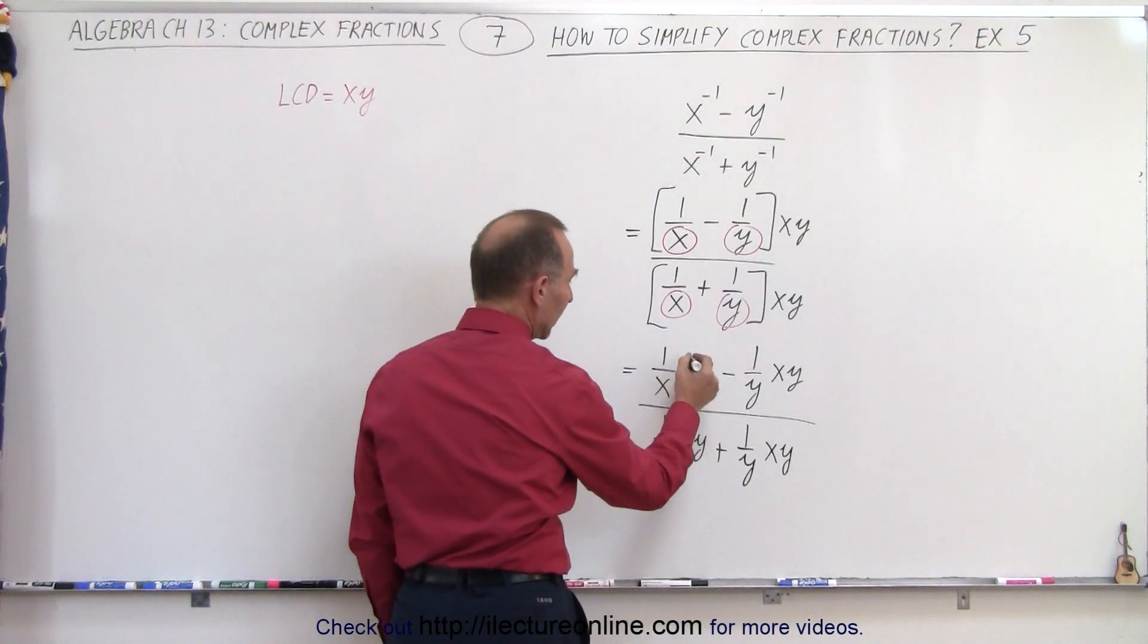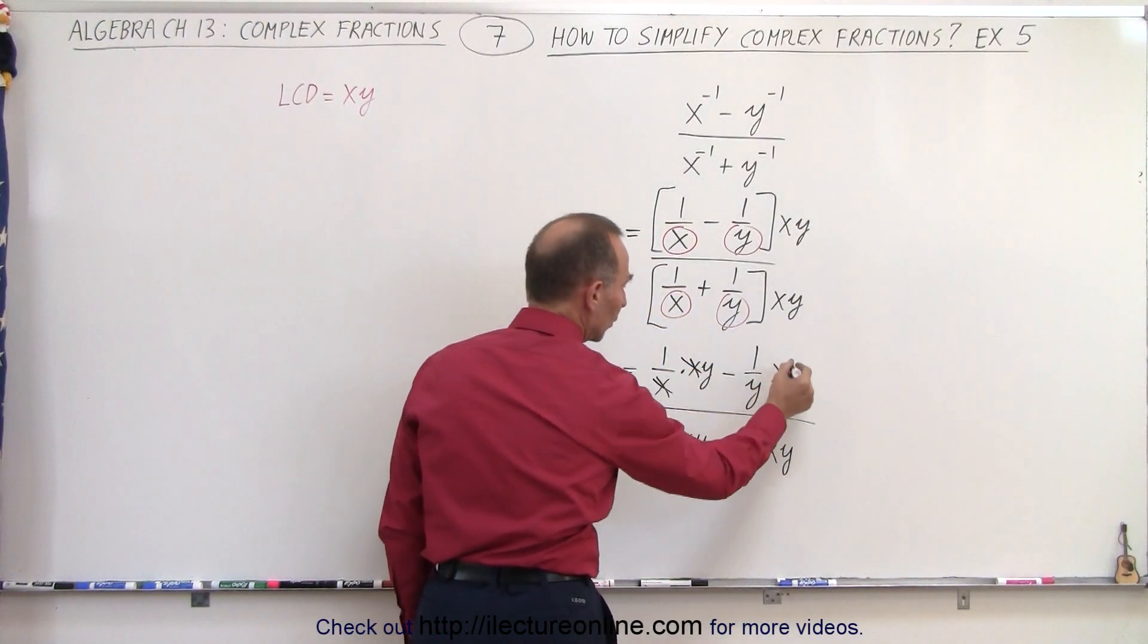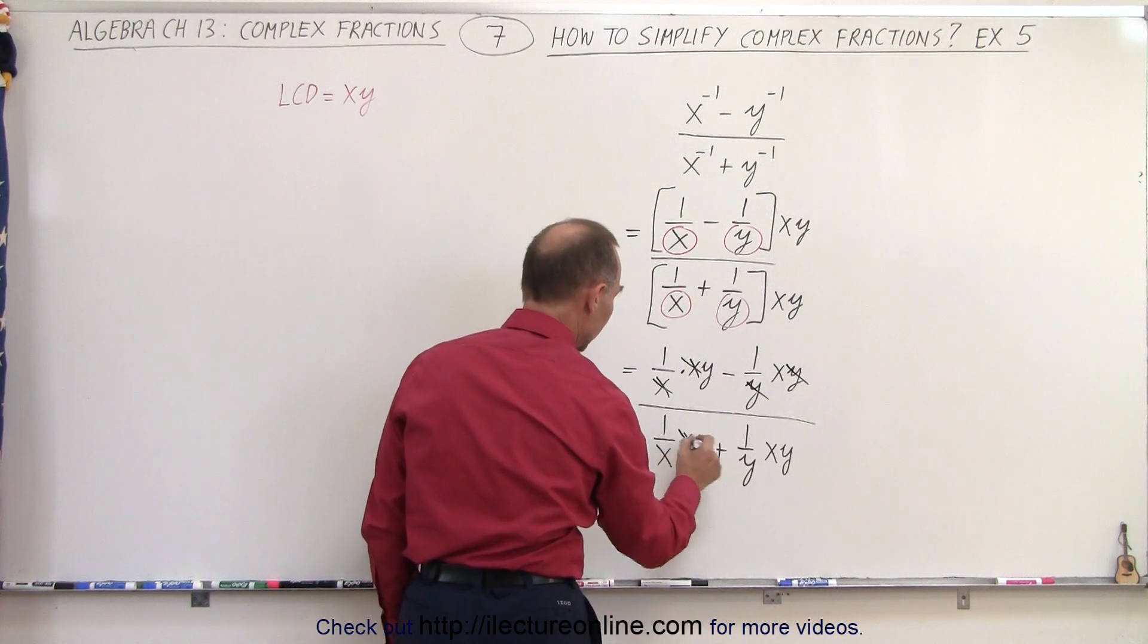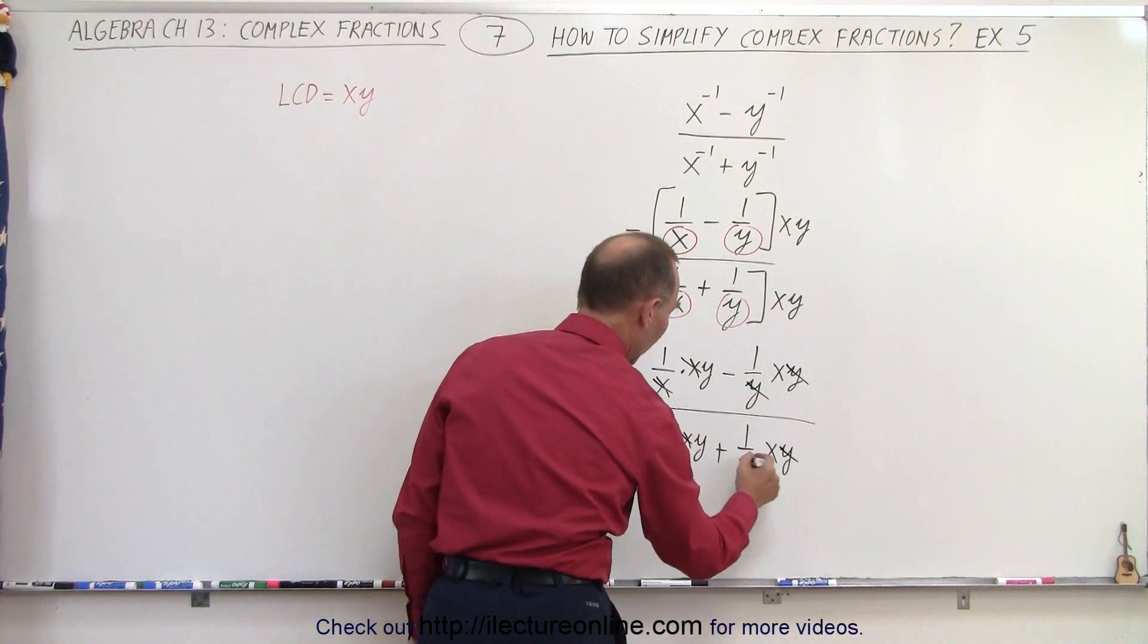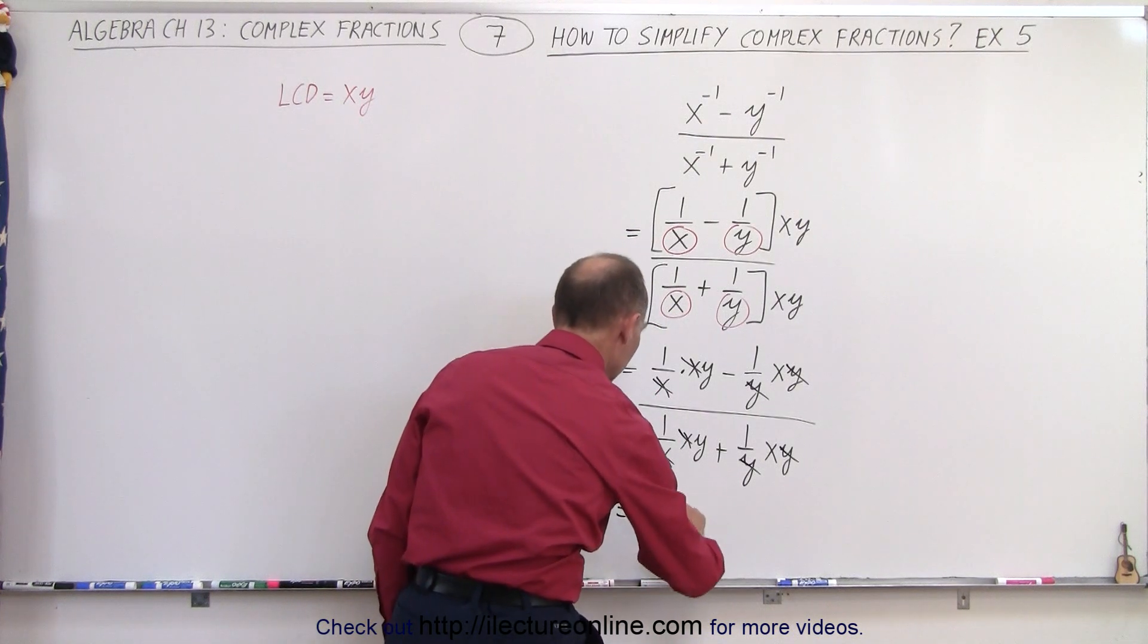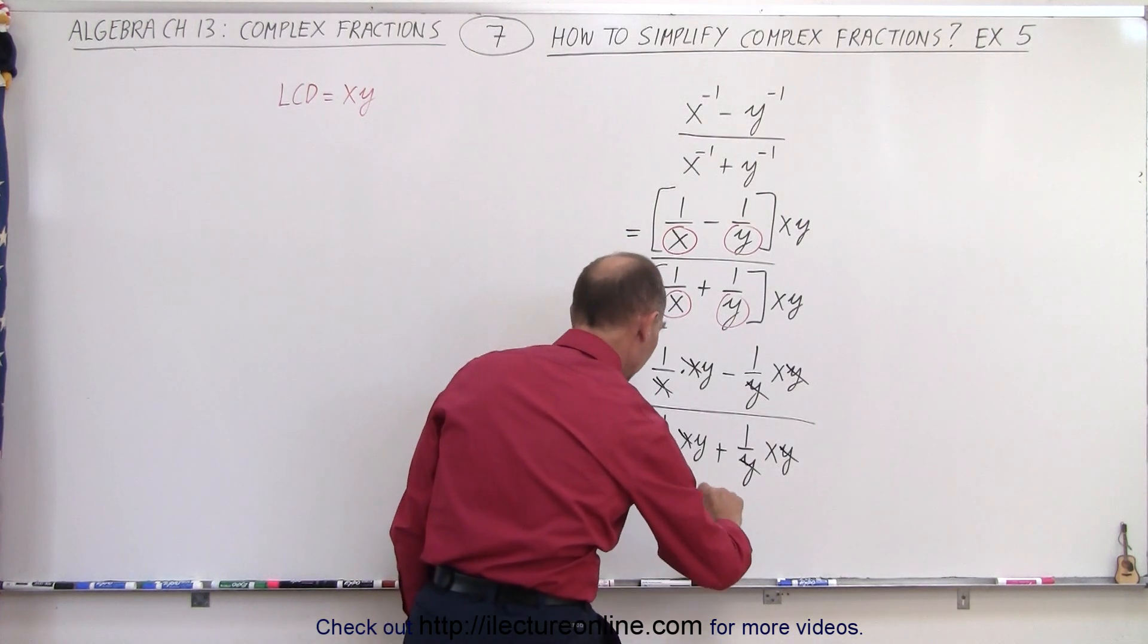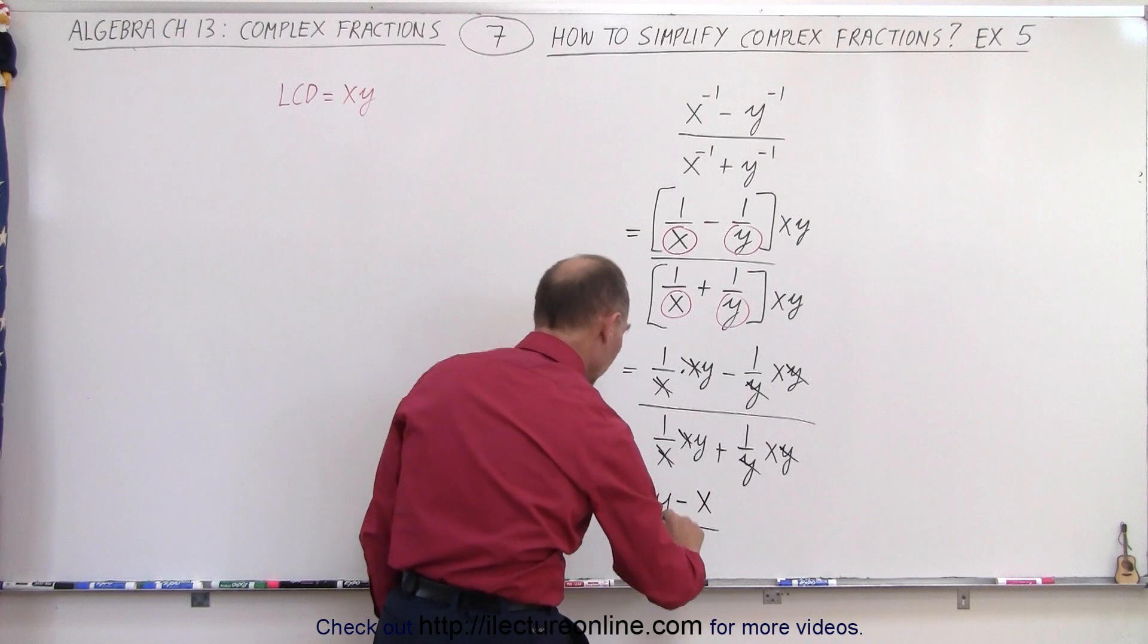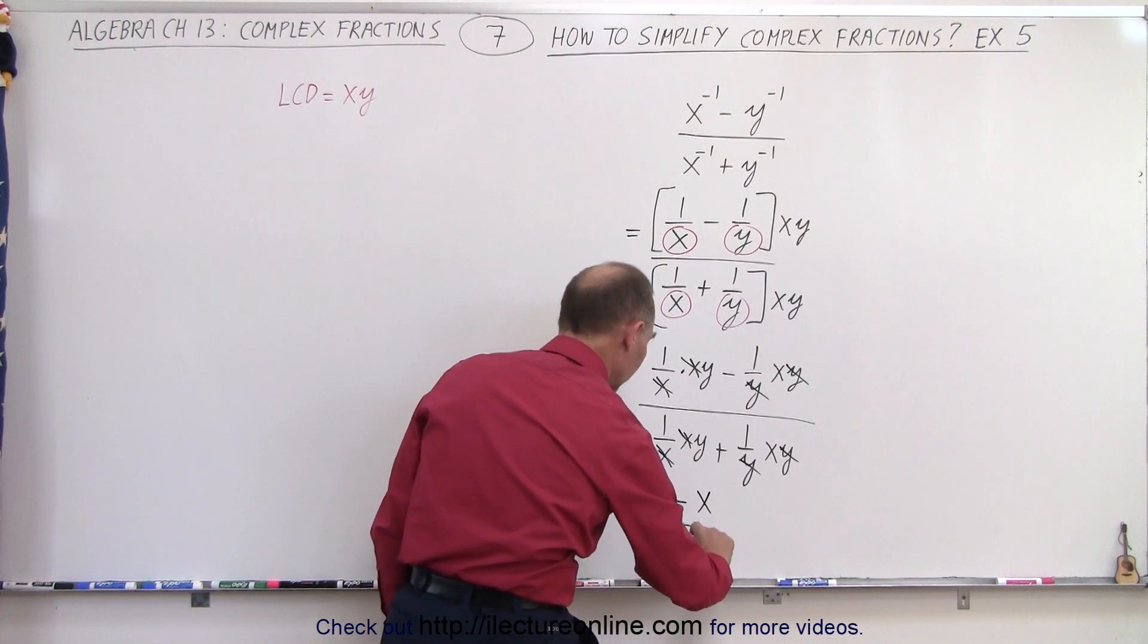Notice here the x's cancel out, here the y's cancel out, here the x's cancel out, and here the y's cancel out. So this can be written as y minus x over y plus x.